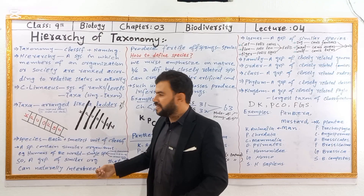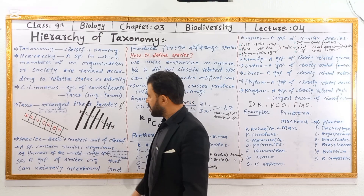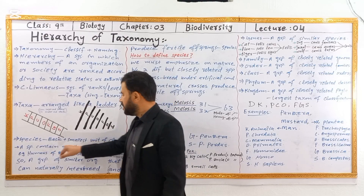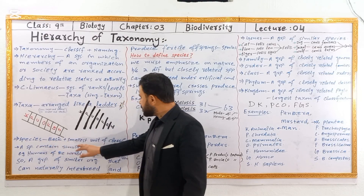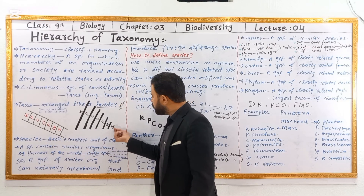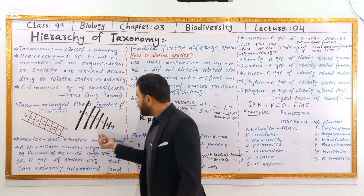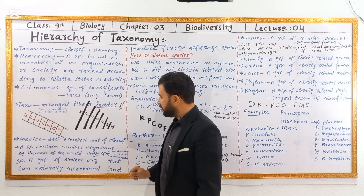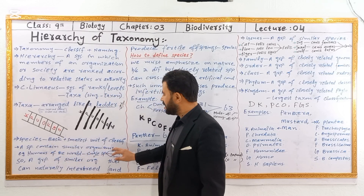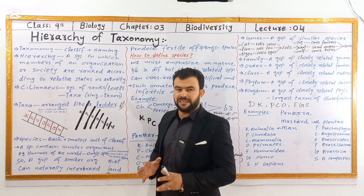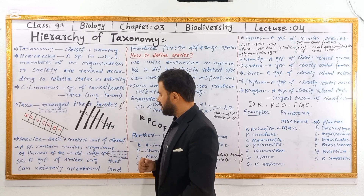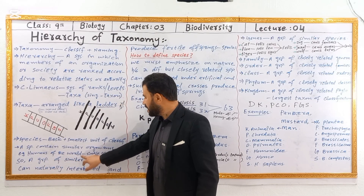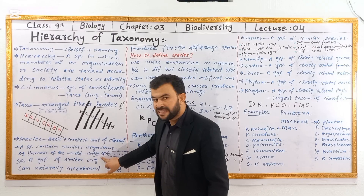The range of levels in taxonomy — scientists say species is the basic unit of classification. It is the smallest unit. A species contains similar organisms. All humans in the world are of a single species.